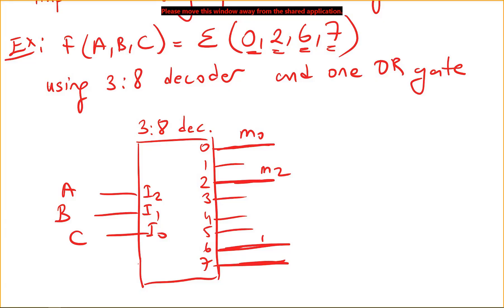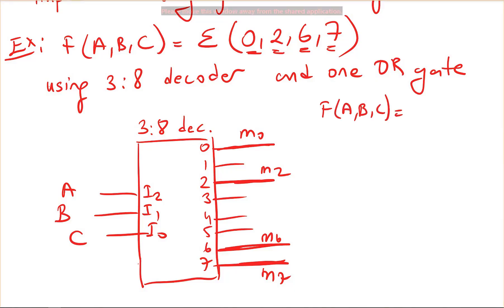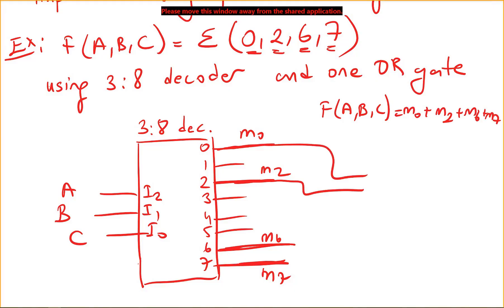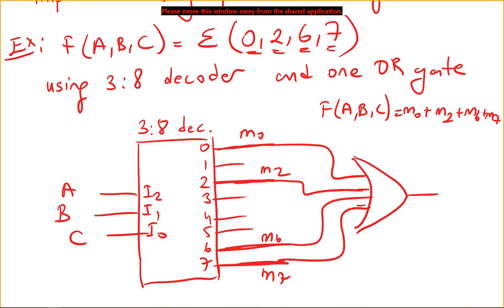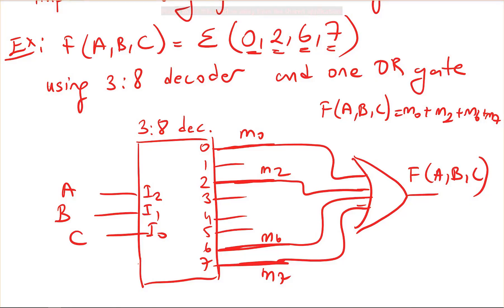The function f is minterm zero OR minterm two OR minterm six OR minterm seven. These are the minterms in our function, so we take outputs m0, m2, m6, and m7, OR them together, and this gives us our function f(a,b,c). The function is implemented using the three-to-eight decoder and one OR gate.